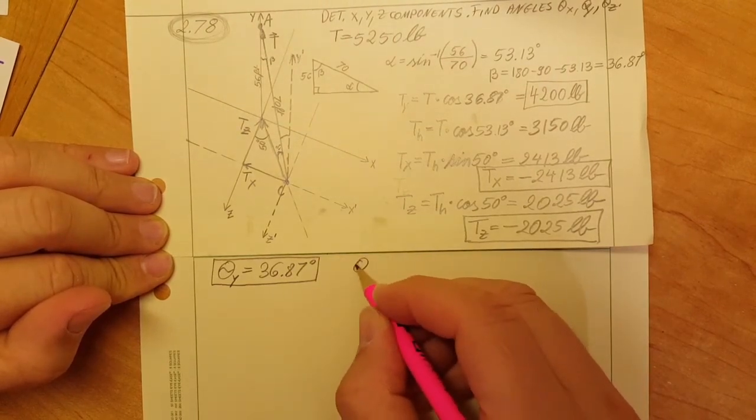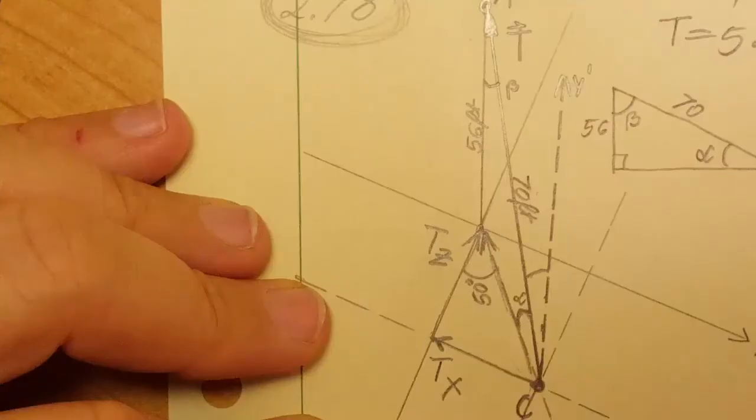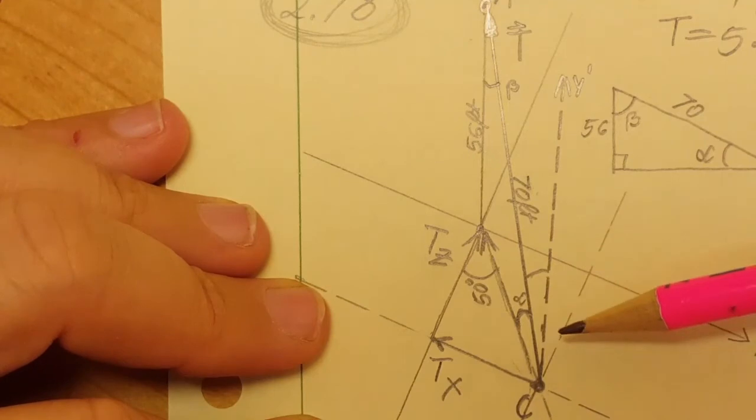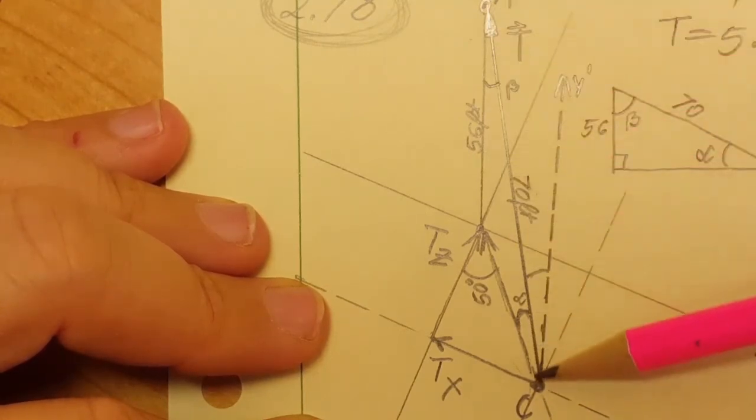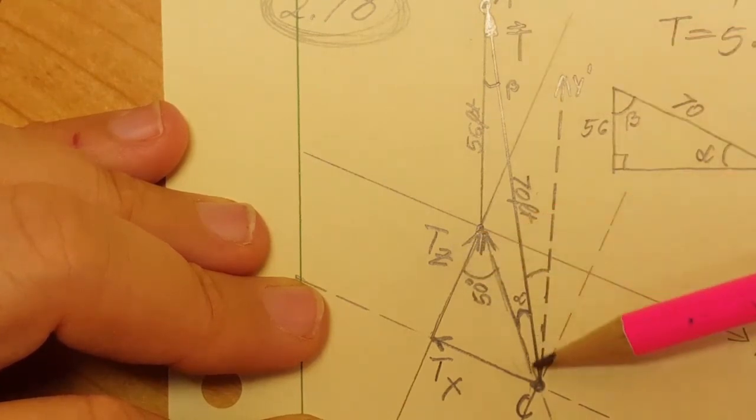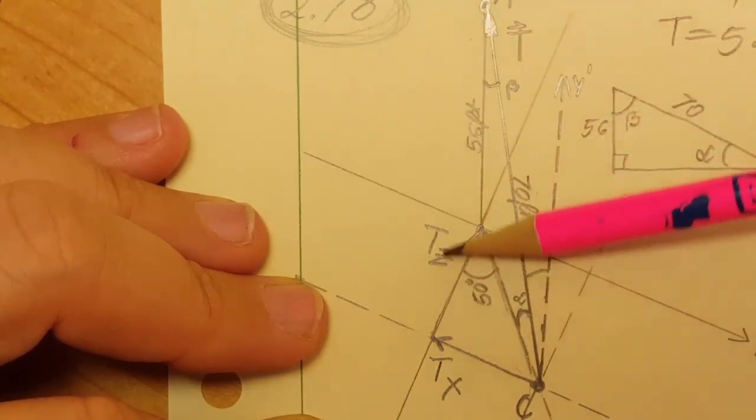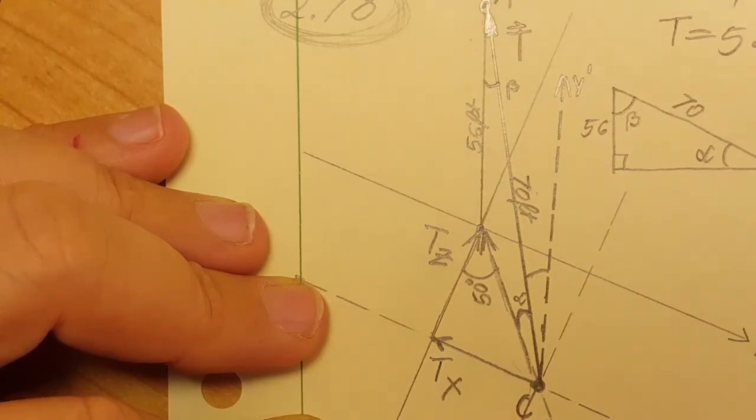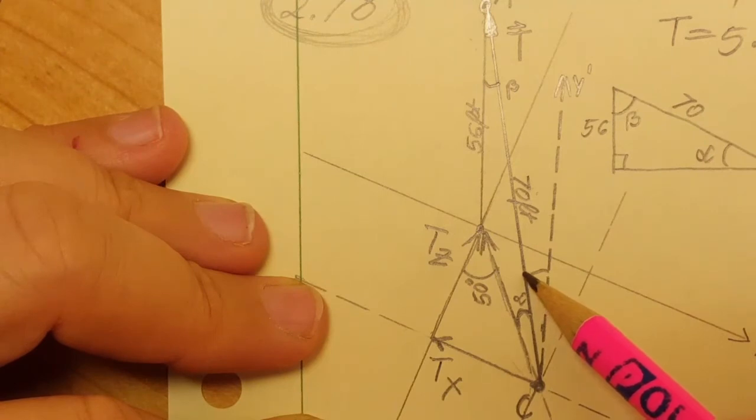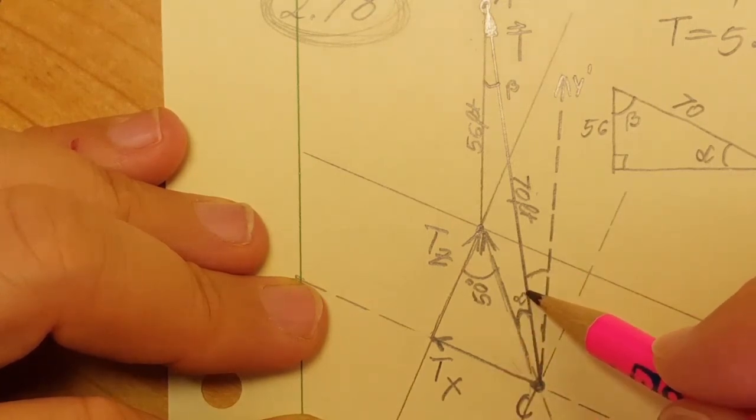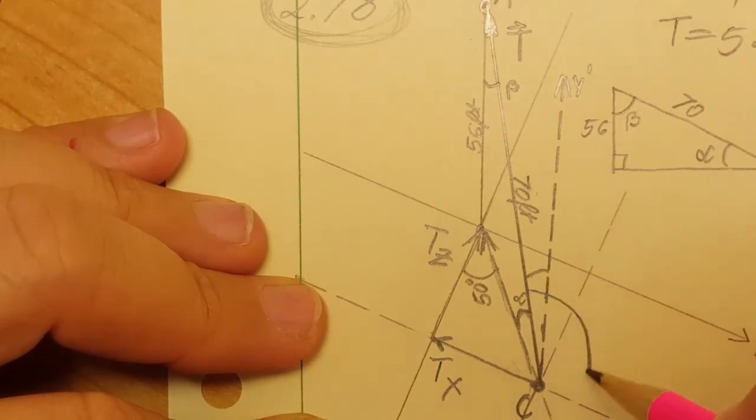Next, let's do theta of x. For theta x, we're going to use the triangle made between our force T and its component T_x, with another line down here. The cosine calculation will give us the angle that goes from our force T all the way down to the positive side of our x axis, and this will be our theta of x.